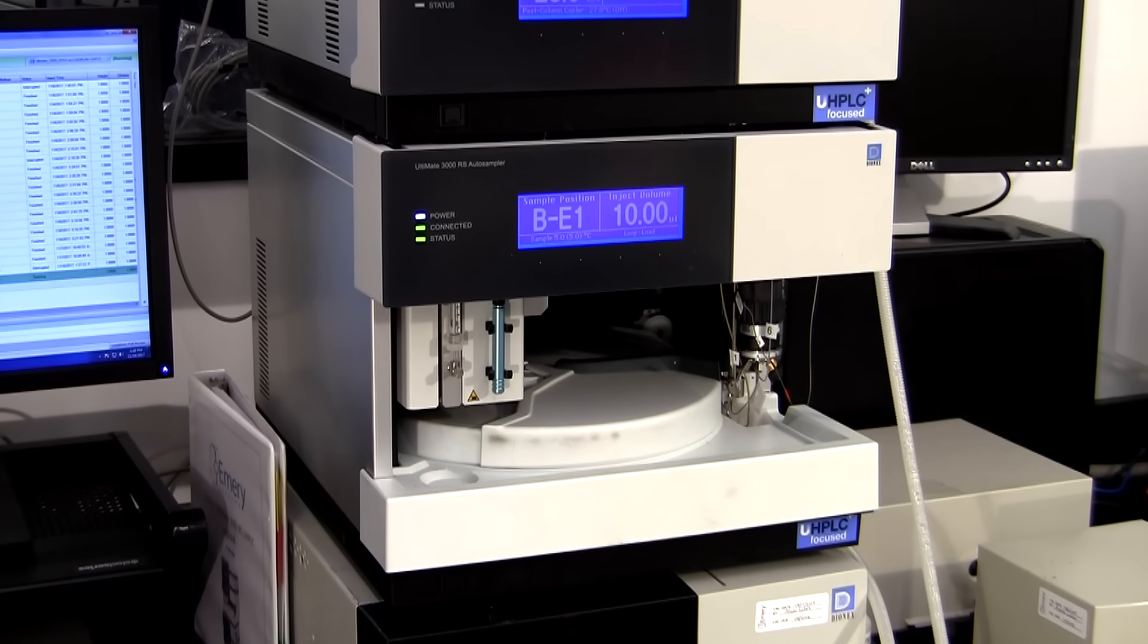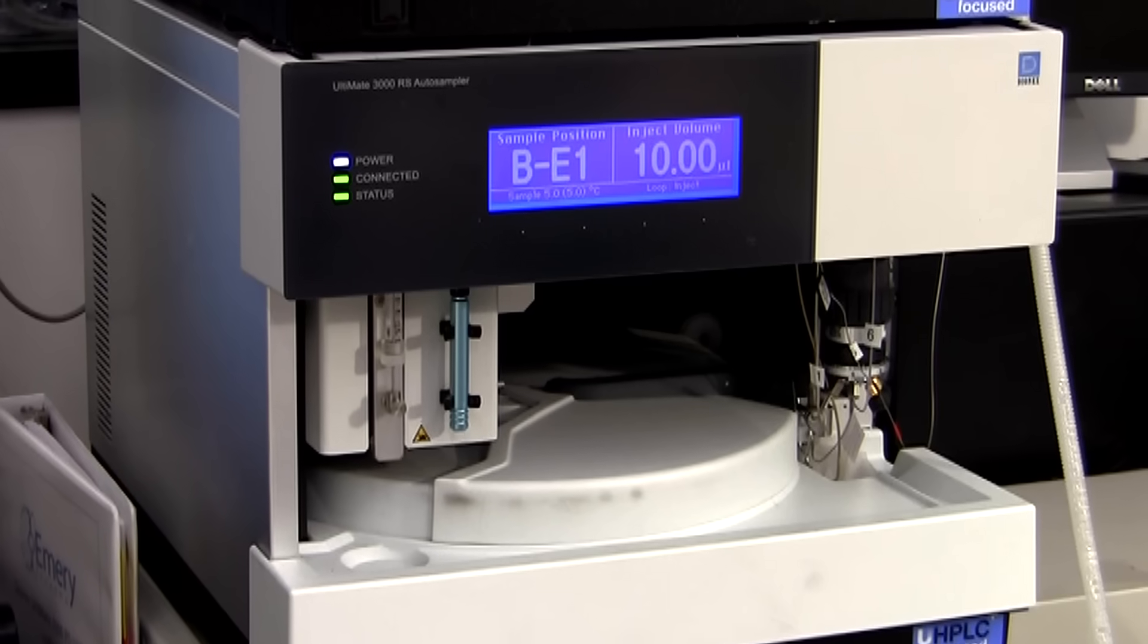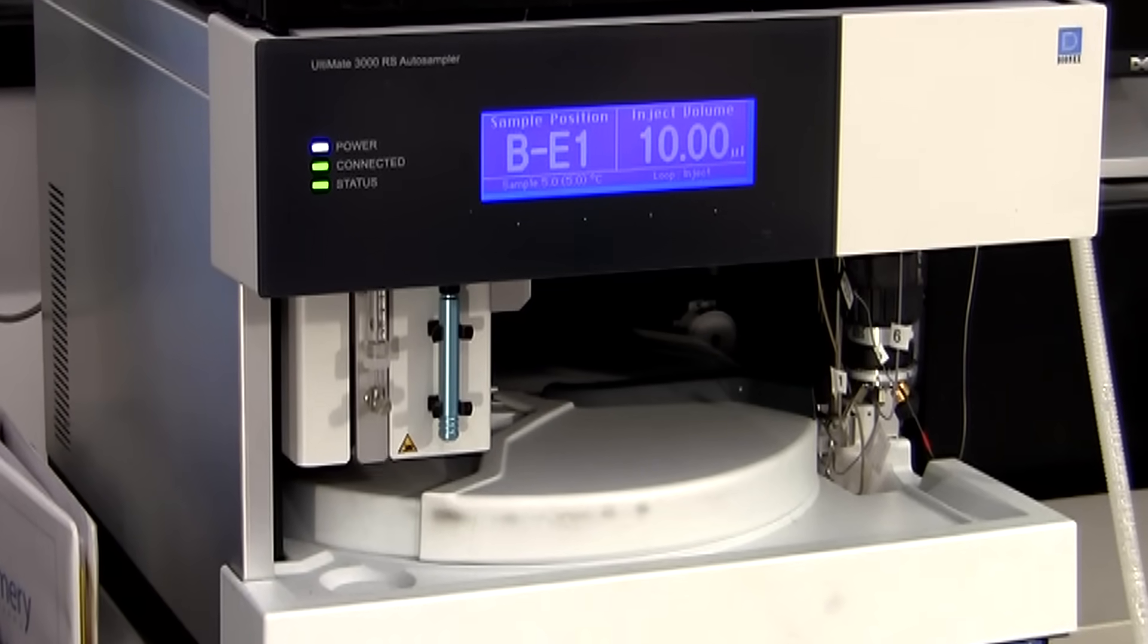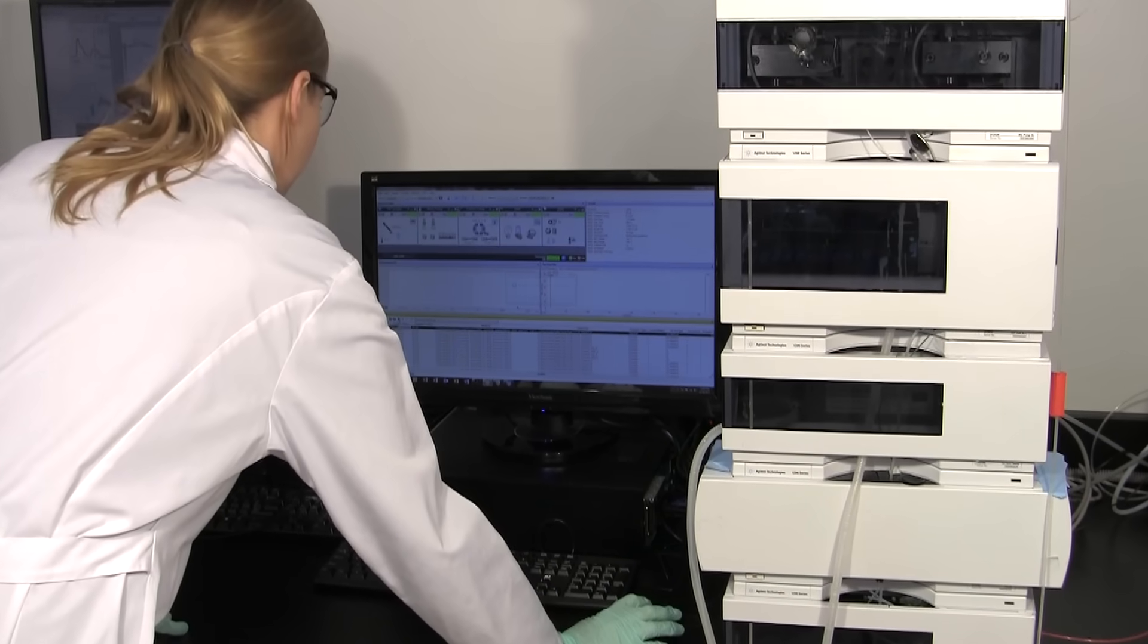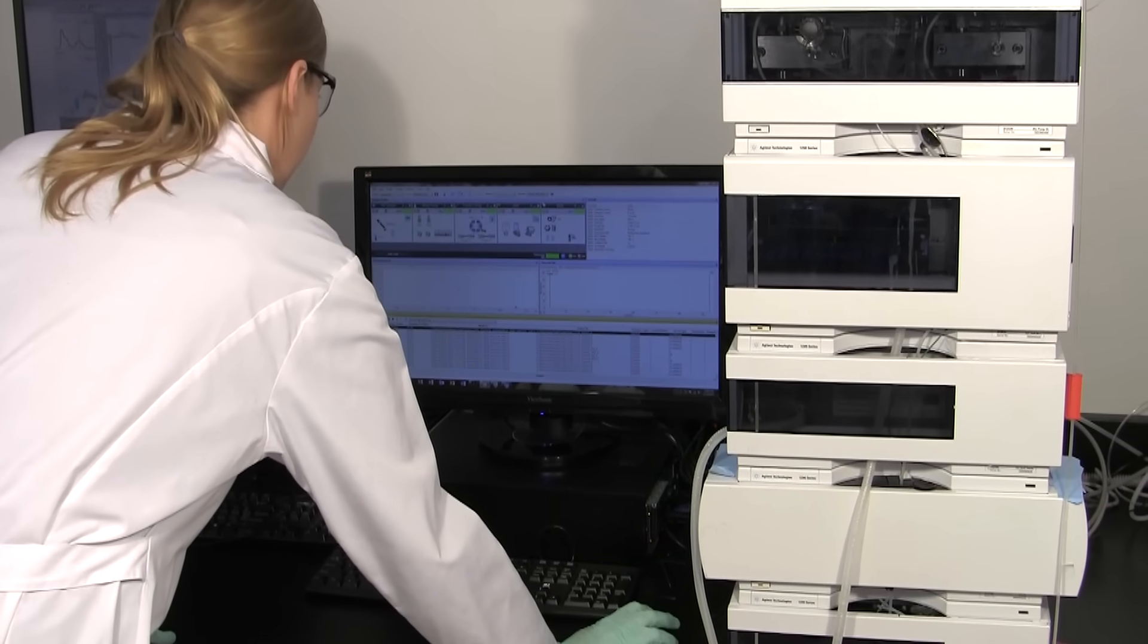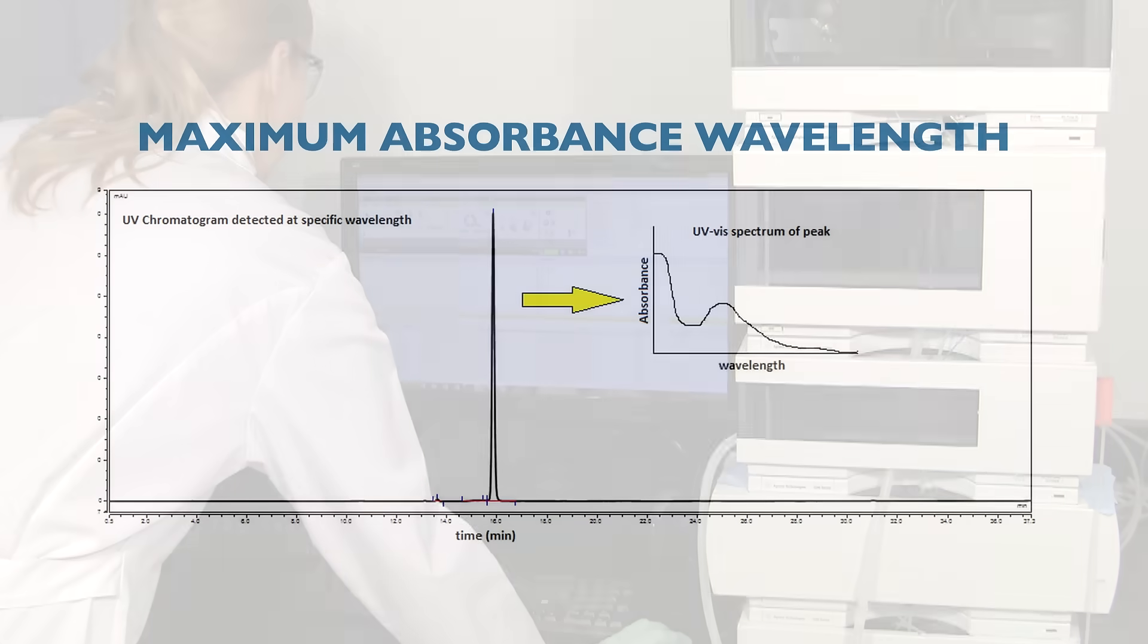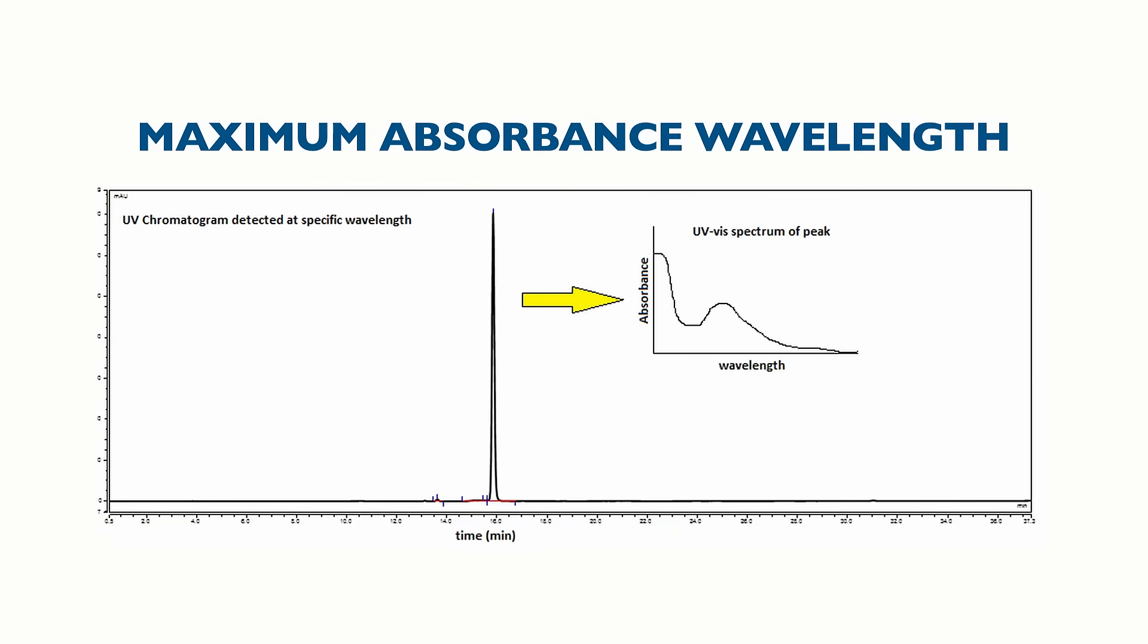For compounds that absorb UV light, HPLC with UV detection is a great choice for sensitive and accurate quantitation. We can measure the target compound's UV-Vis spectrum with a spectrophotometer to determine the maximum absorbance wavelength. This wavelength can be used to detect the compound in the sample.